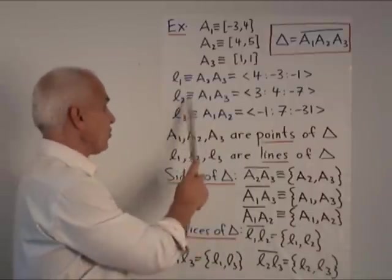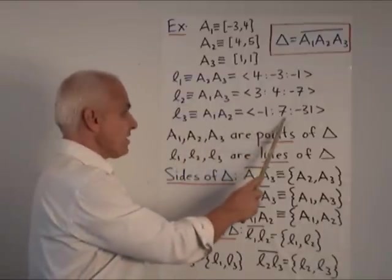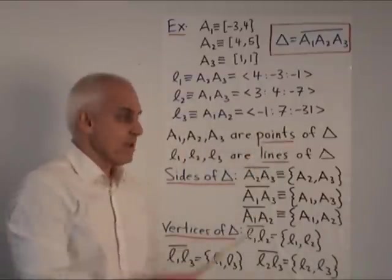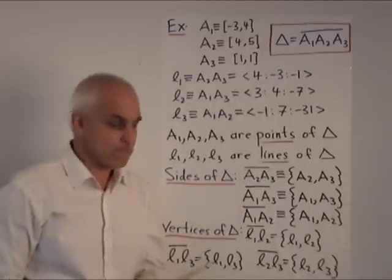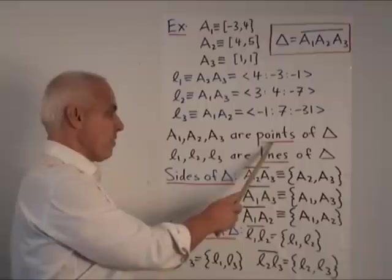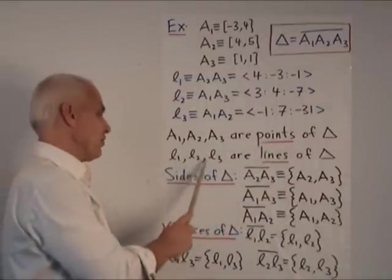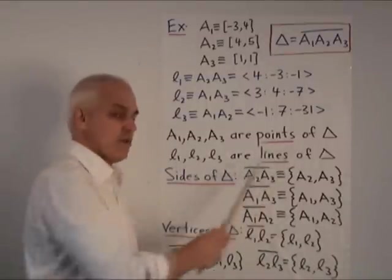Similarly, the line L2 is <3:4:-7>. The line L3 is <-1:7:-31>. Please check those calculations. The points A1, A2, and A3 are called the points of a triangle. The lines L1, L2, and L3 are called the lines of the triangle.